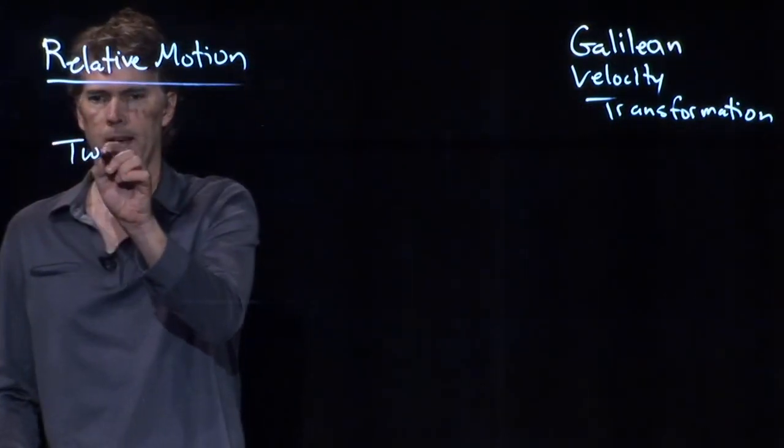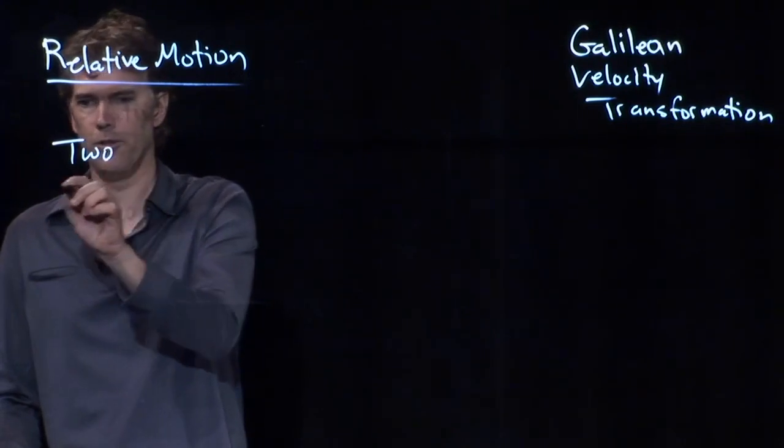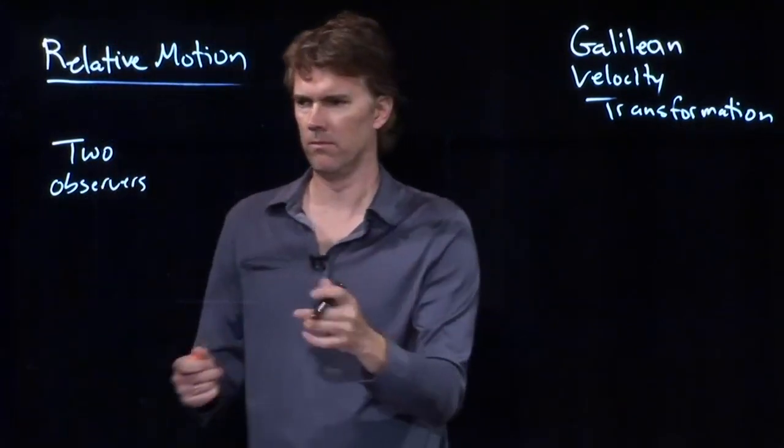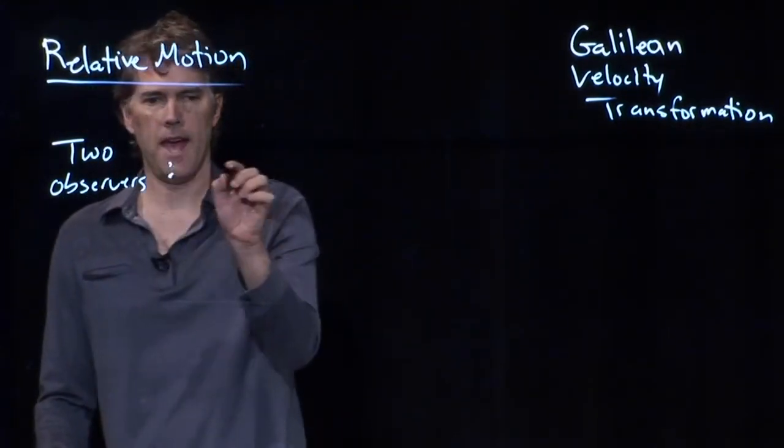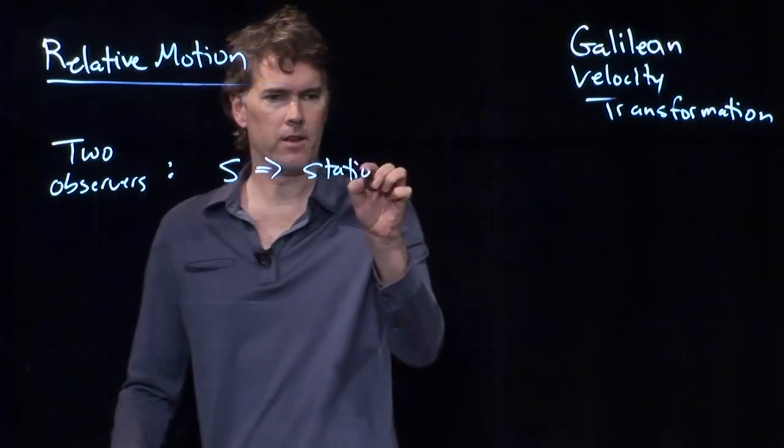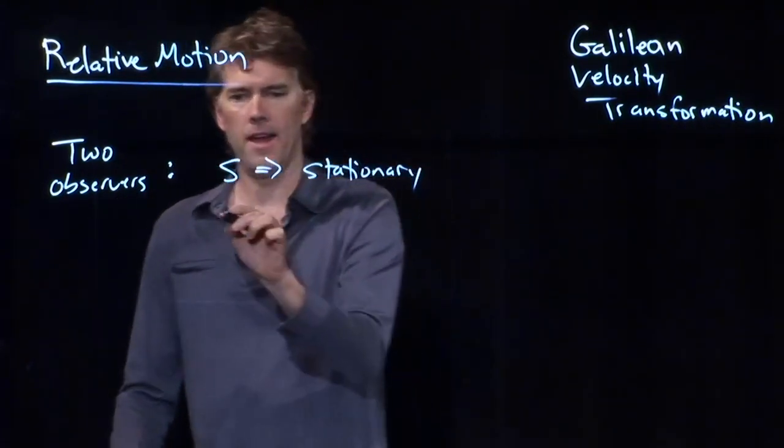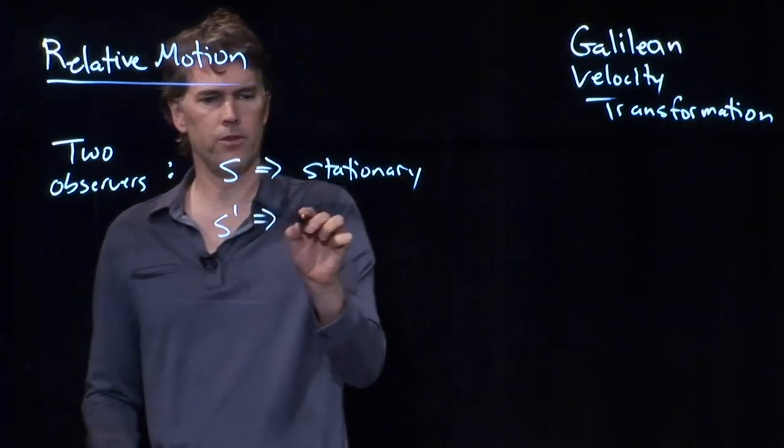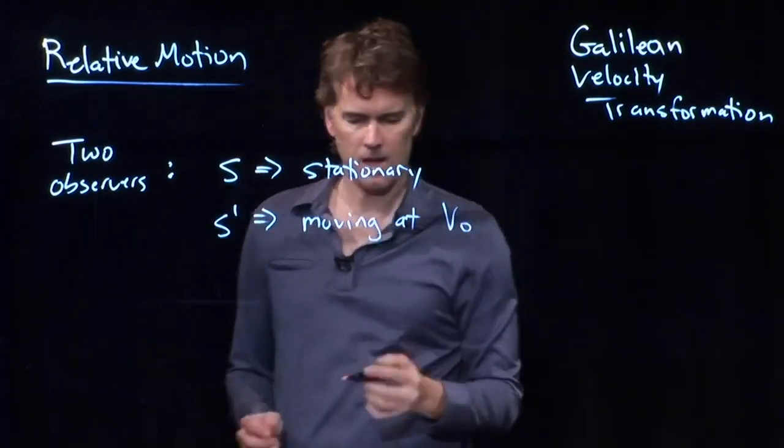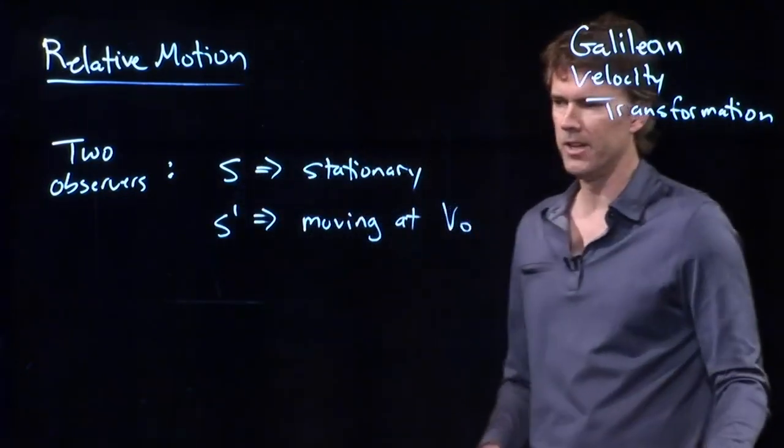Okay. Let's say we have two different observers. That could be like me and you. And S is the stationary observer. That's you. S prime is the moving observer. That's me. Okay? And I am moving at a speed V naught.